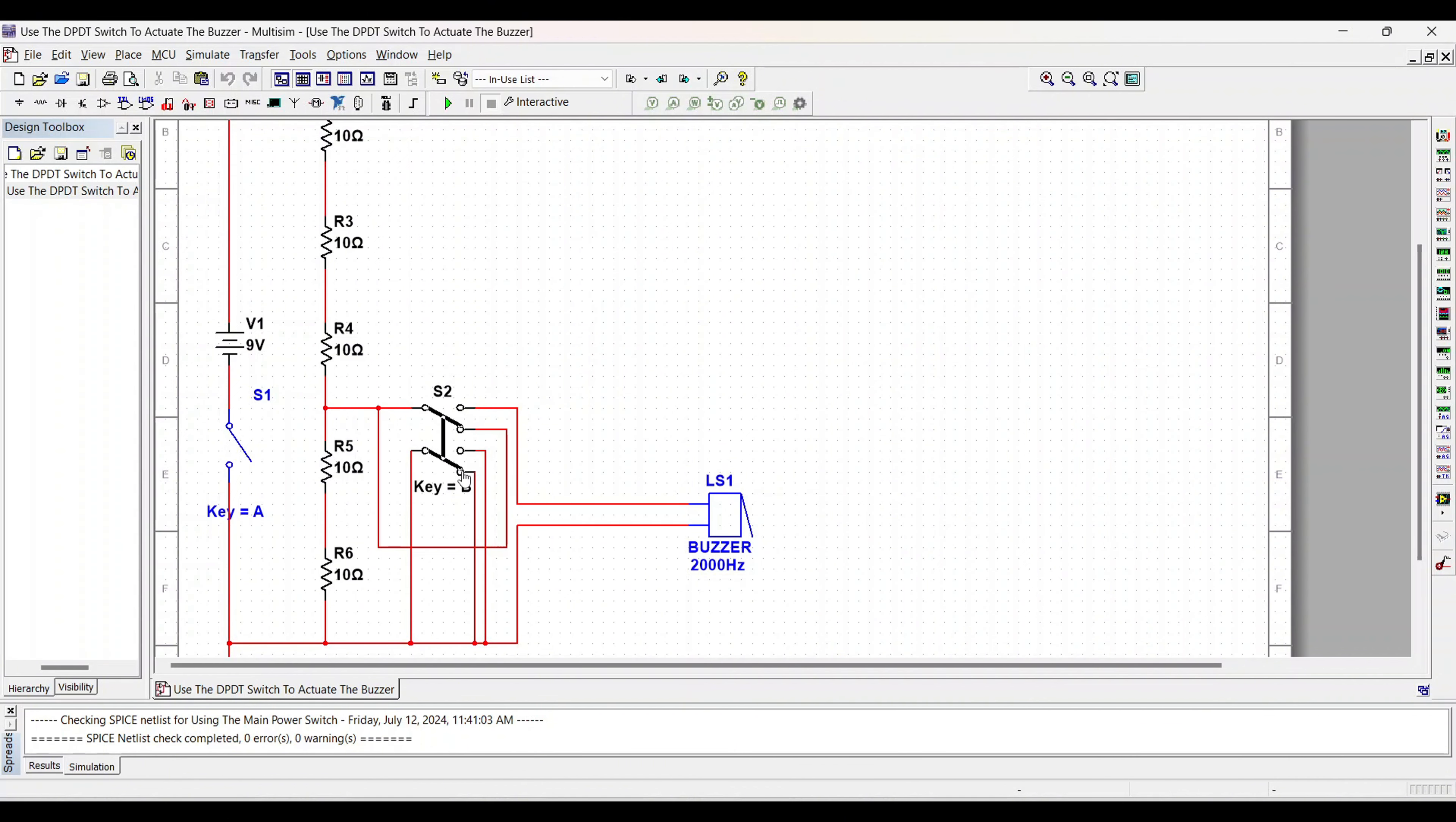Here's what happens when I switch it. So because we're only using one of the single pull double throws of the two that make up a double pull double throw, I have this entire one just sent to ground.